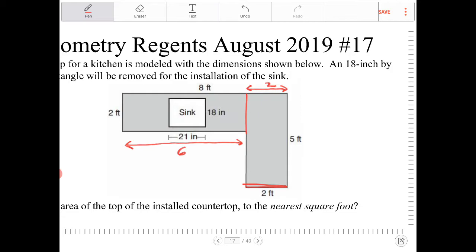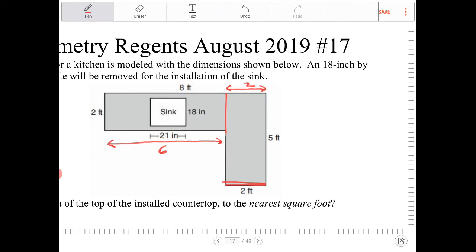So to find the area of this L-looking shape without taking into account of the area of the sink, so let's do that. We're finding the area of the two larger rectangles. So that's 2 times 6 plus 2 times 5.